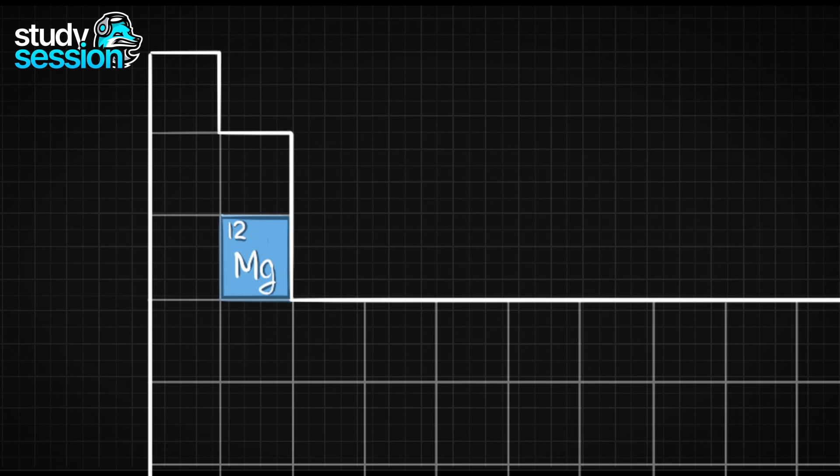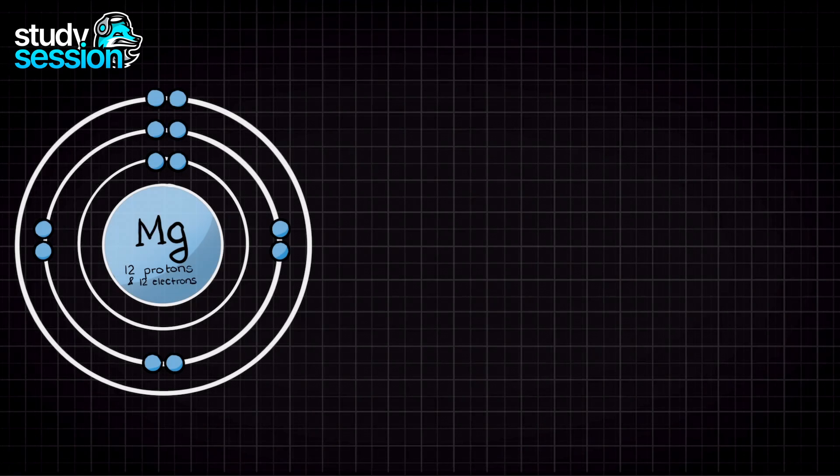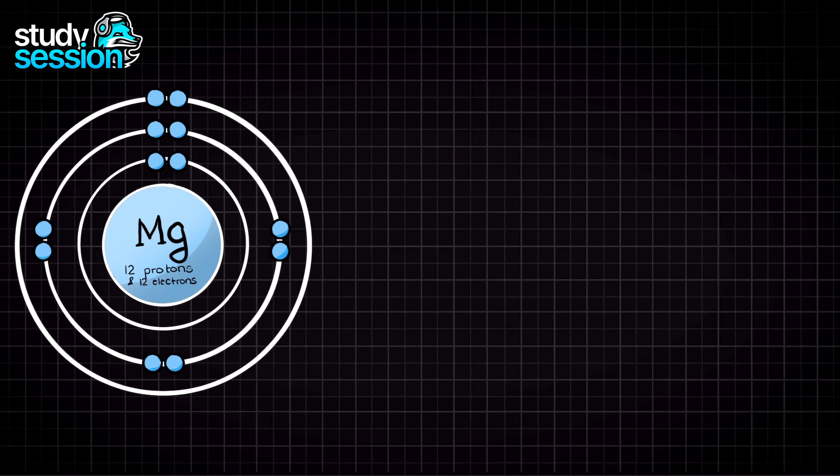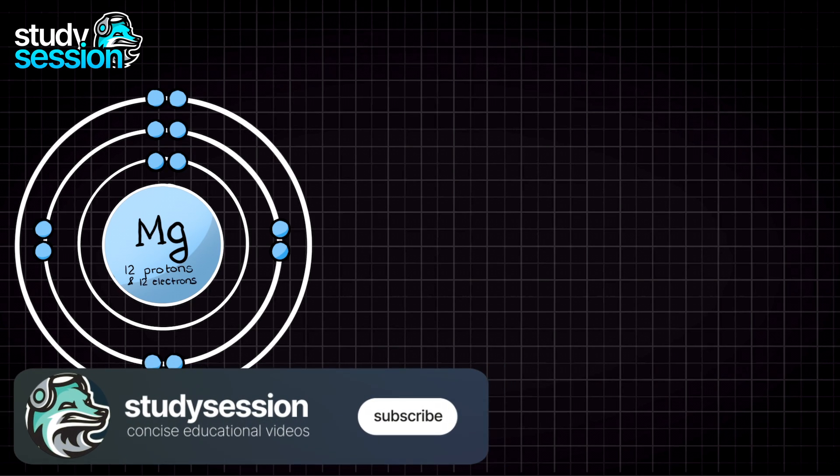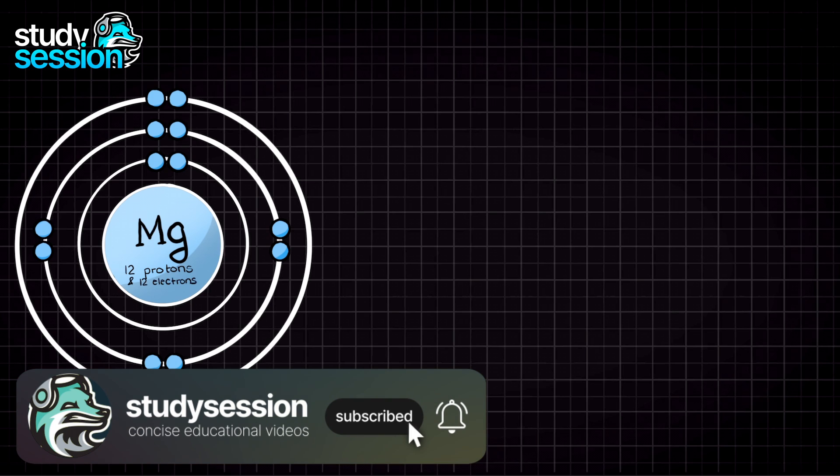Looking this up, we can see that magnesium is number 12 on the periodic table, meaning that in a neutral state, no positive or negative charge, our magnesium atom will have 12 protons in its nucleus, and thus 12 electrons surrounding that nucleus.